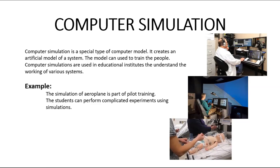The students can perform complicated experiments using simulations۔ مثلاً آپ shopping malls میں gaming area میں دیکھتے ہیں کہ وہاں bikes ہوتی ہیں جہاں آپ بیٹھ کر racing دے سکتے ہو — clutch، brakes، accelerator سب کچھ ہوتا ہے اور سامنے screen لگی ہوتی ہے۔ آپ کو لگتا ہے کہ آپ really bike چلا رہے ہو۔ آپ سیکھ سکتے ہو کہ کب accelerator زیادہ کرنا ہے، brake کب لگانی ہے، gear کیسے لگانے ہیں۔ You can learn how to drive a bike with an artificial model of a system.